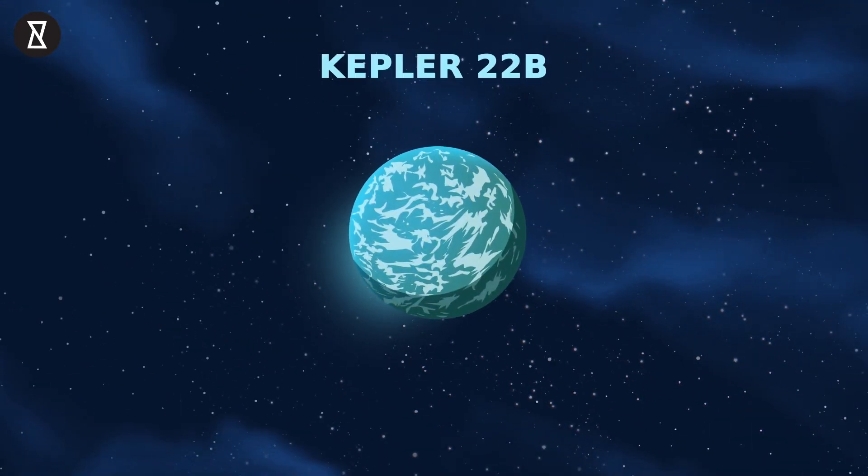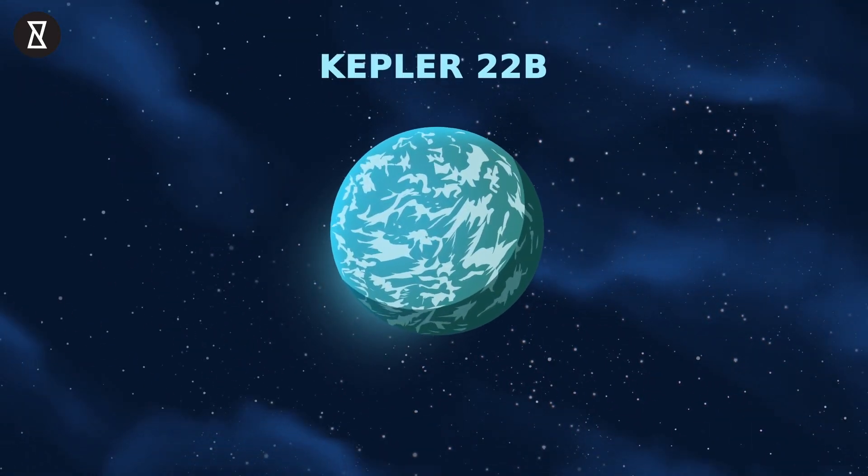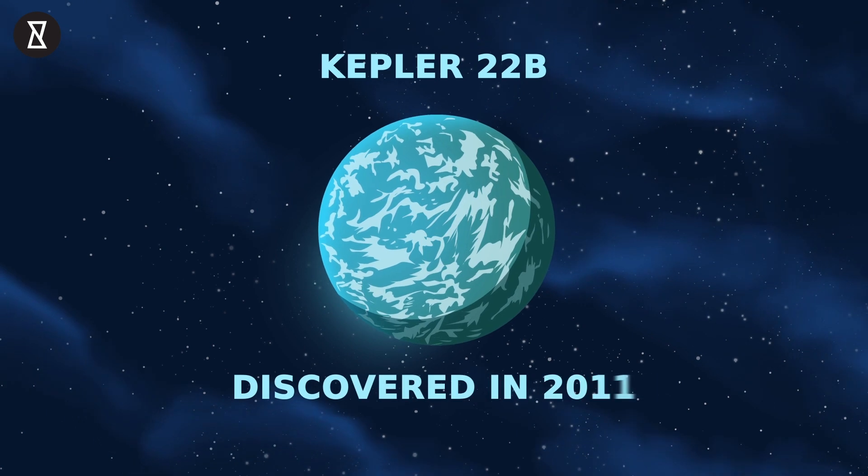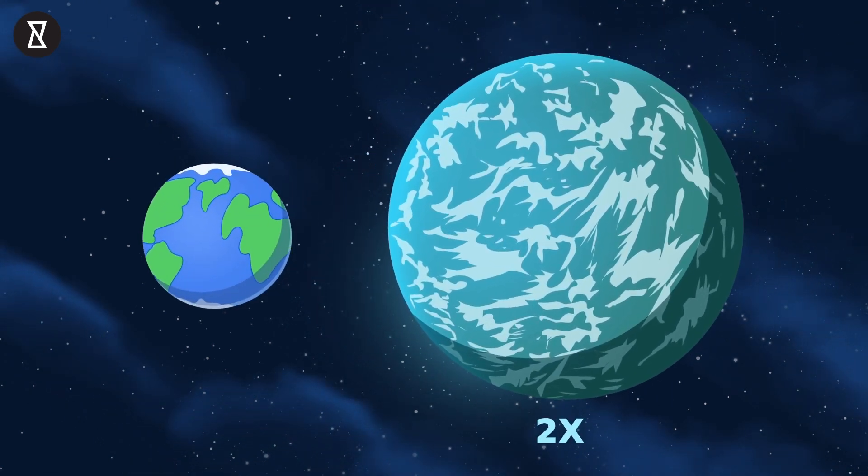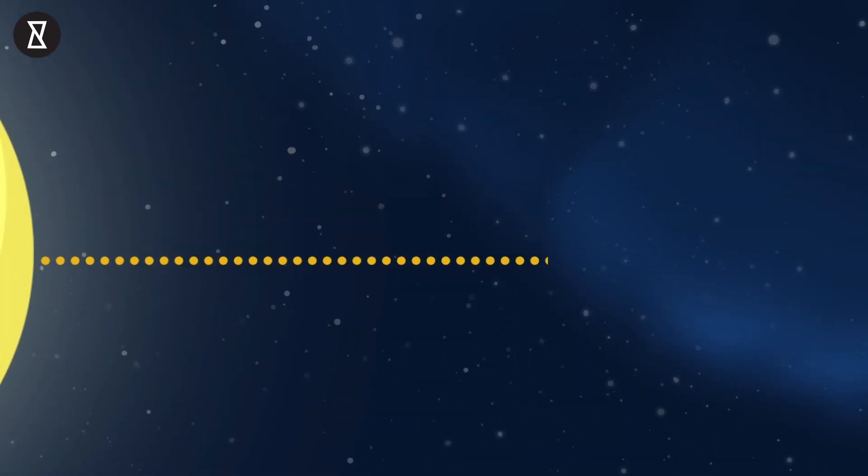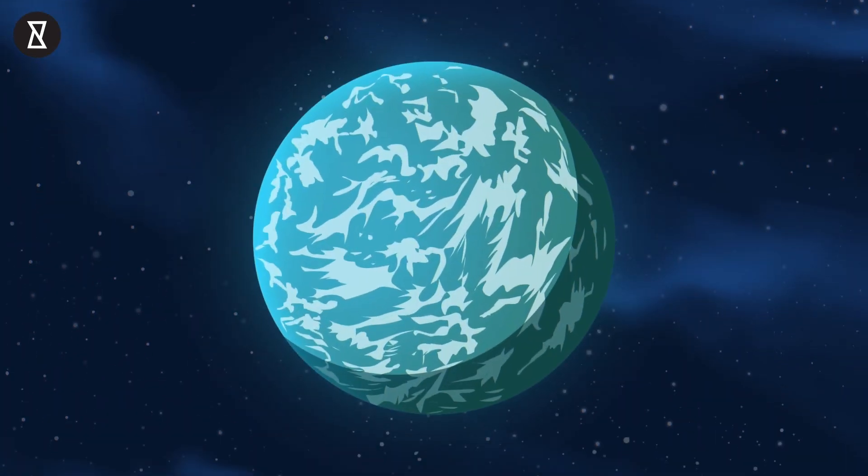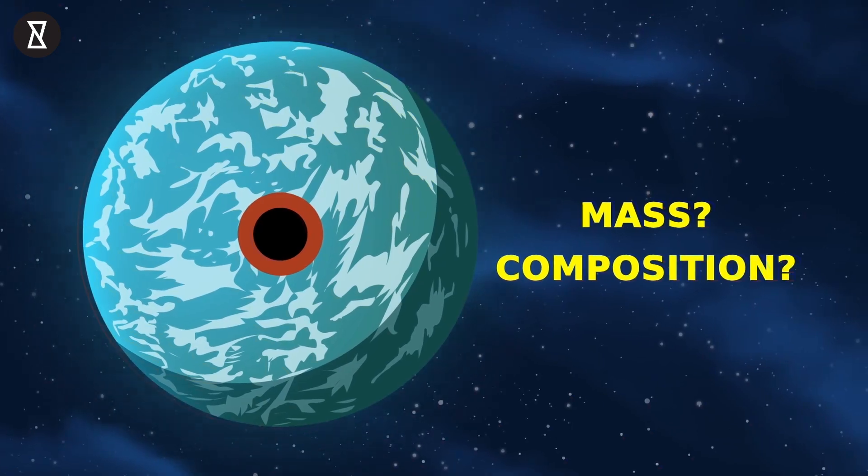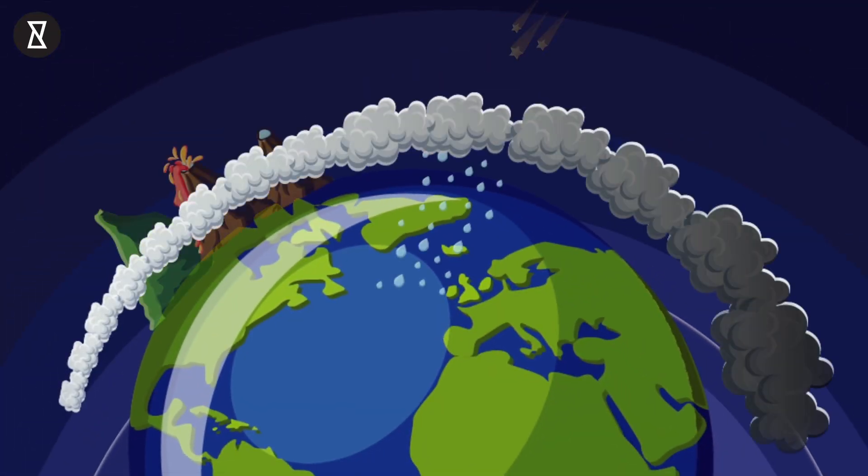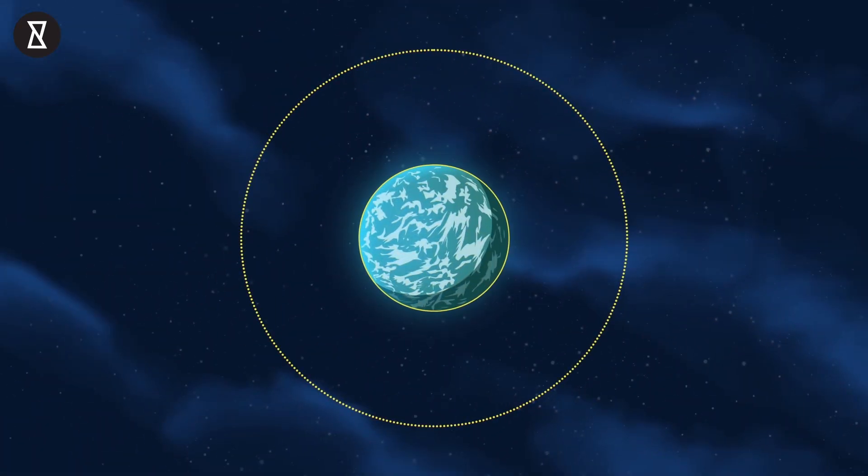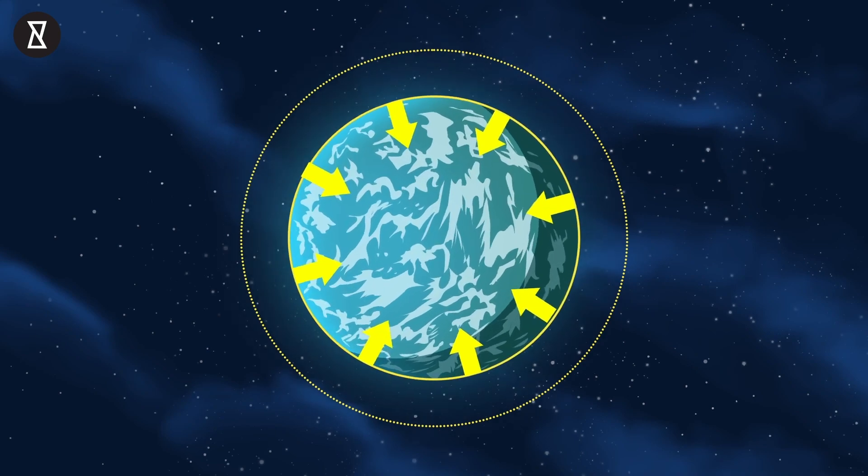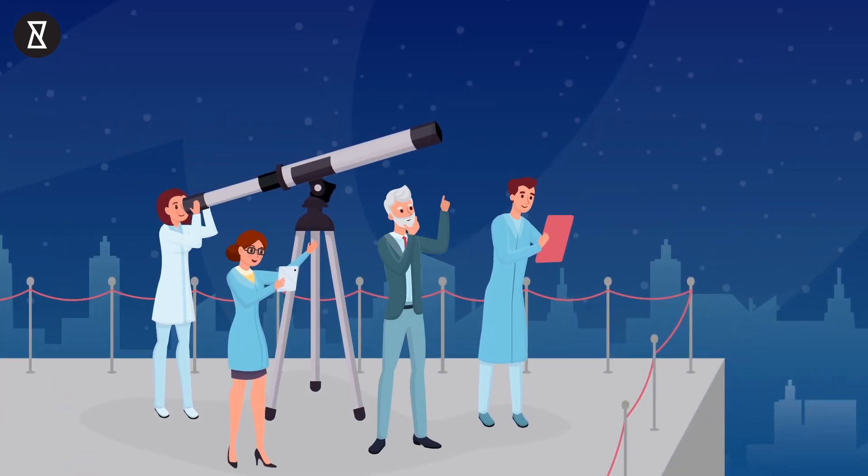Kepler 22b. This is the name of a planet that scientists discovered in 2011. It's approximately twice the size of the Earth and exists at a distance from its sun which is about right for sustaining life. We don't know too much about its mass or its composition, so we don't know for sure whether it has an Earth-like atmosphere or exactly what the effects of its gravity are like, and it's so far away that it's going to take us a while to find out.